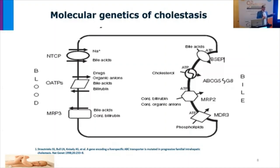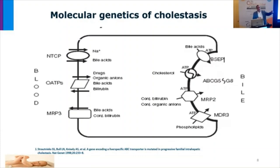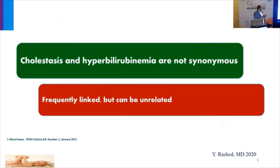A patient may have cholestasis without jaundice, and other patients can have jaundice without cholestasis features. Phospholipid passes through the canalicular membrane via MDR3 (multidrug resistance protein type 3); mutation at this level leads to familial intrahepatic cholestasis type 3. Cholesterol crosses the canalicular membrane through two transporters, ABCG5 and ABCG8, 50% each. Mutation at this level leads to sitosterolemia. So cholestasis and hyperbilirubinemia are not synonymous.